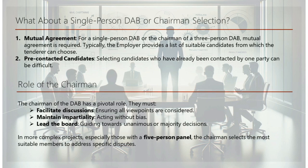The chairman of the DAB has a pivotal role: they must facilitate discussions ensuring all viewpoints are considered, maintain impartiality acting without bias, and lead the board guiding towards unanimous or majority decisions. In more complex projects, especially those with a five-person panel, the chairman selects the most suitable members to address specific disputes, helping maintain the board's effectiveness and impartiality.